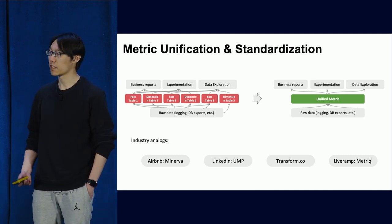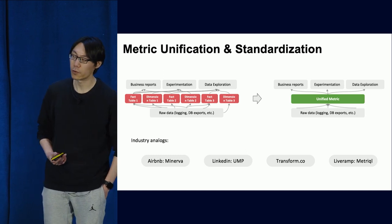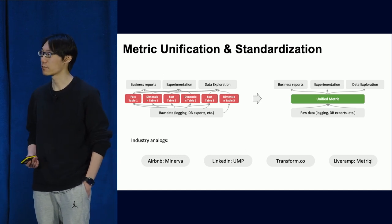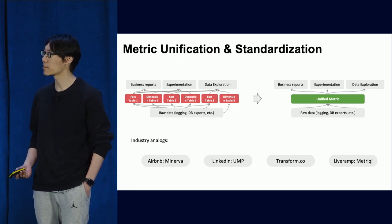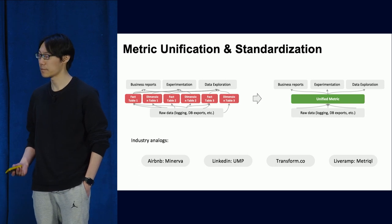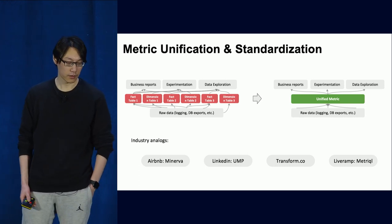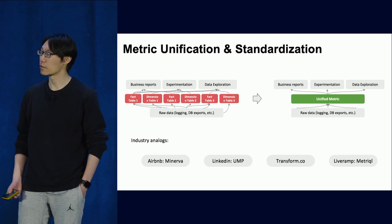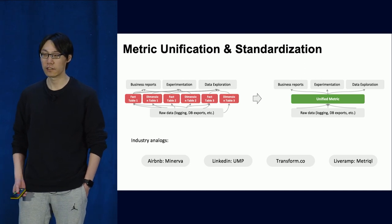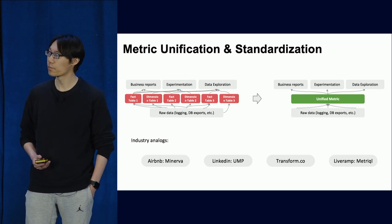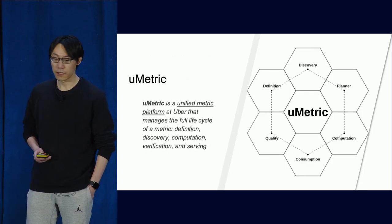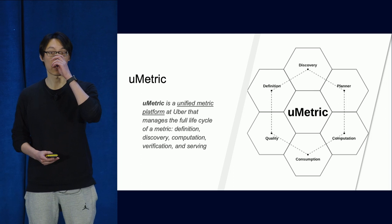The solution is standardization and unification — with all computation and metric definitions unified, everybody uses the same table created by the same pipeline. With use cases centralized to a single platform, we can check data quality, guarantee SLAs, and improve query and computation performance. Many companies in the industry like Airbnb and LinkedIn are doing such work. At Uber, we call this U-Metric.